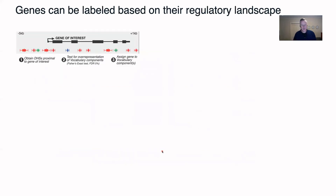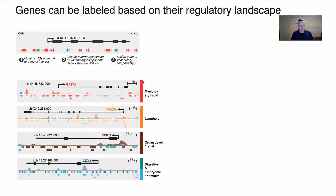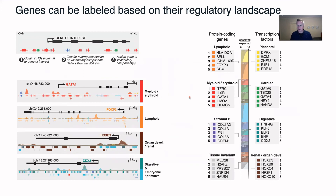We wanted to test whether this generalizes. We took all Gencode annotated genes and systematically tested them for over-representation of particular vocabulary components. In this way we could indeed assign GATA1 to the myeloid/erythroid component, FOXP3 to a lymphoid component, and so on. This works quite well: the top five genes associated with the lymphoid component are all known to be involved in immune response, and the same holds for the myeloid/erythroid component with genes relevant for blood traits. This patterning is even stronger for transcription factors — for the cardiac component, the top five transcription factor genes annotated with that component are essentially all the cardiomyocyte lineage specifier factors.